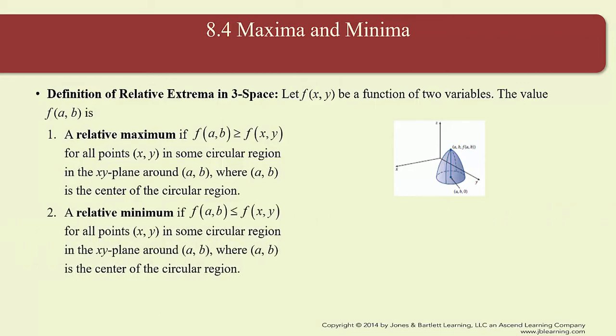The value f(a,b) is a relative minimum if f(a,b) is less than or equal to f(x,y) for all points (x,y) in some circular region in the xy-plane around the point (a,b), where (a,b) is the center of the circular region. That is technically speaking the definition of a relative maximum and a relative minimum.